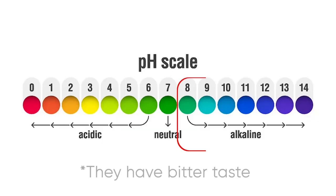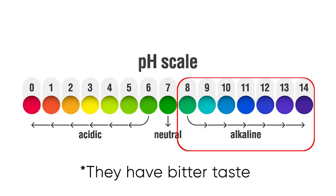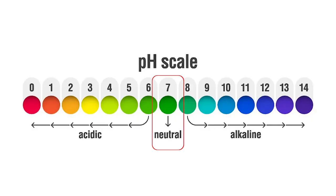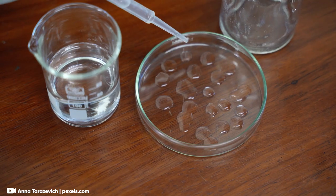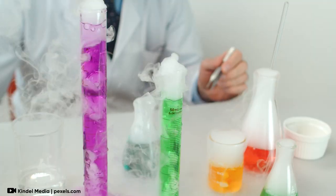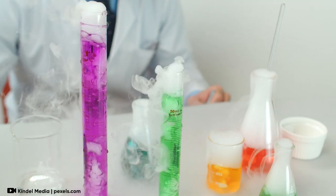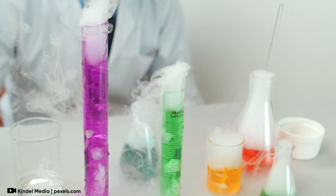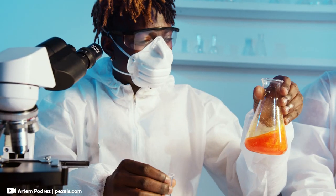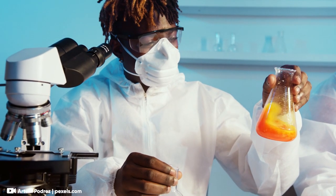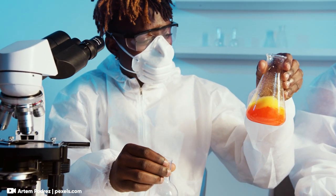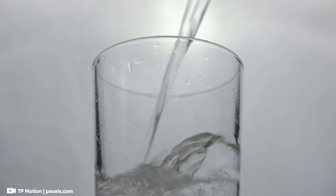If the pH level is above 7, it is alkaline or basic, like baking soda or soap. A pH level of exactly 7 means the substance is neutral, like pure water. Understanding pH helps us know how substances will react with one another — acids and bases can neutralize each other when mixed, creating new products like water and salt.